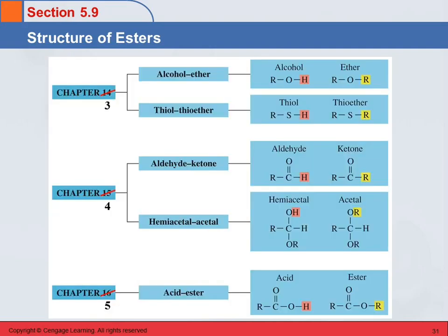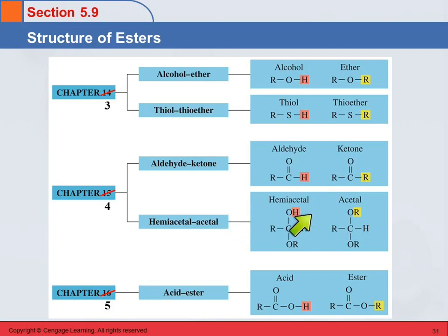So here's a summary. This kind of summarizes these different structures that we've looked at: the alcohol versus the ether, the thiol versus the thioether, the aldehyde versus the ketone, the hemiacetal versus the acetal, and the acid and the ester.